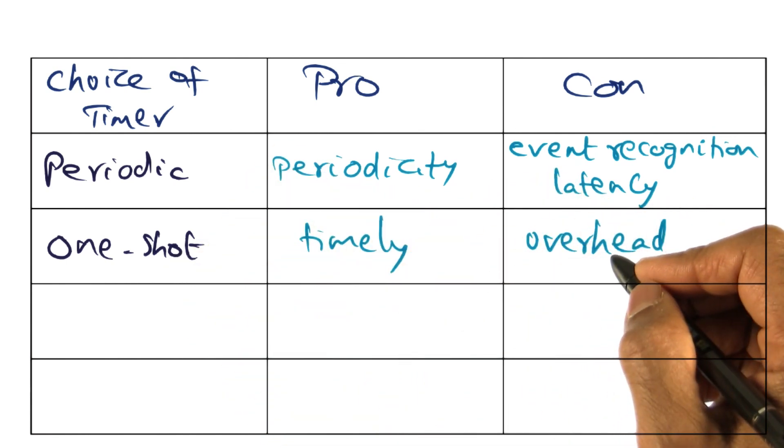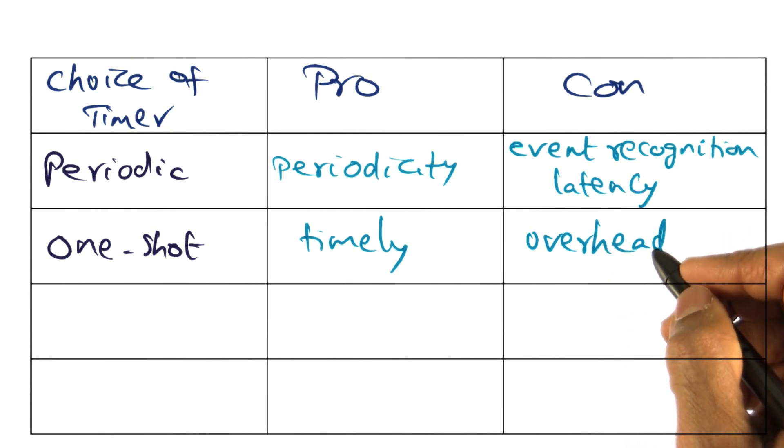And secondly, there is also fielding these one shot timers as and when they occur. That's an extra overhead that the operating system has to deal with.